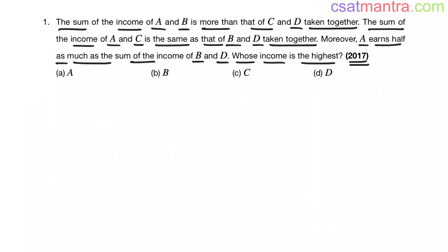Though the question may seem a bit theoretical and lengthy, it is very easy. All you have to do is go step by step — divide and rule concept. Just pay attention to how I am doing this. First, it is given that the sum of the income of A and B is more than that of C and D taken together.